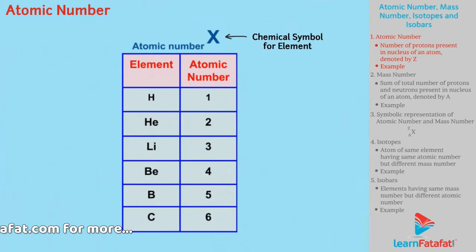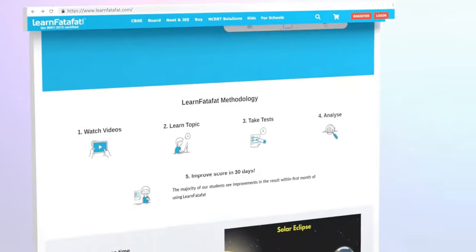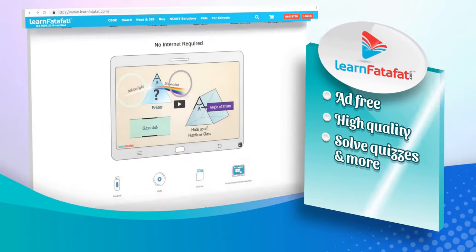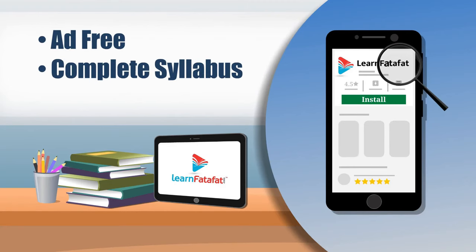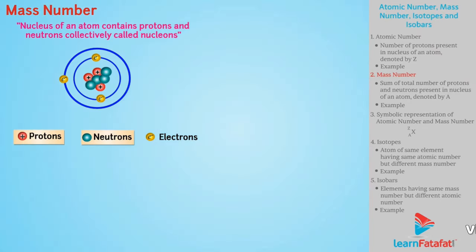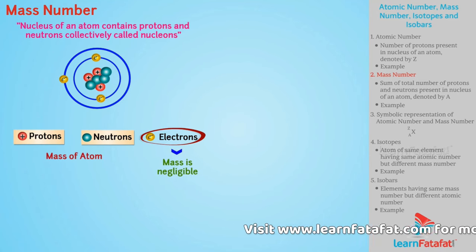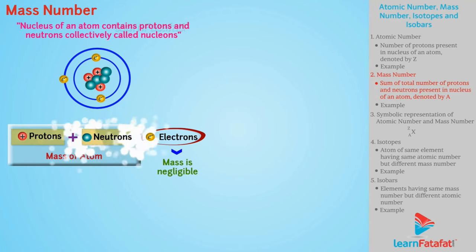Atomic numbers of some elements are shown in the table. Regarding mass number: the nucleus of an atom contains protons and neutrons, collectively called nucleons. As the mass of an electron is negligible, the mass of an atom depends on the masses of protons and neutrons. Mass number is defined as the sum of the total number of protons and neutrons present in the nucleus of an atom, and is denoted by capital A.